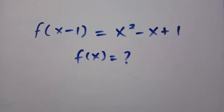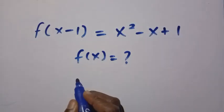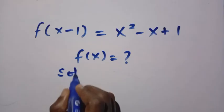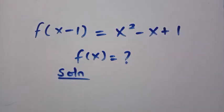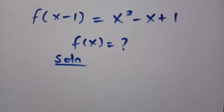Given that f of x minus 1 equals x squared minus x plus 1, I want to find f of x. So I'll be solving this in two different ways. Let's see the first method of solving this.